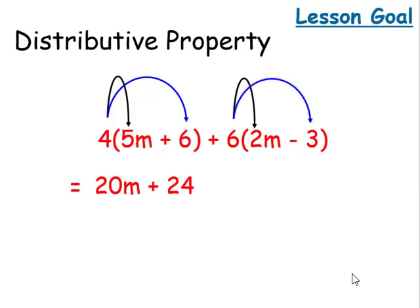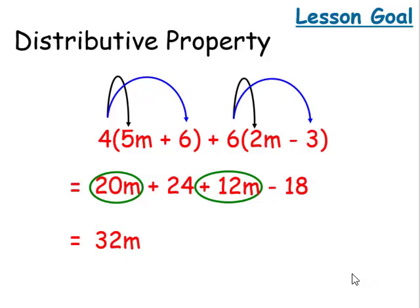Six times two M and six times three. That's going to give us 12 M minus 18. The 20 M plus the 12 M are like terms. We're gonna combine those and get 32 M. 24 minus 18 gives us a plus six.